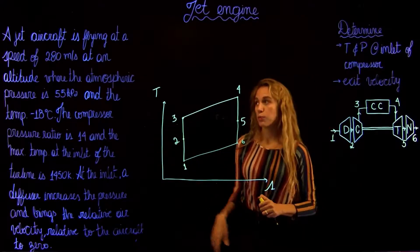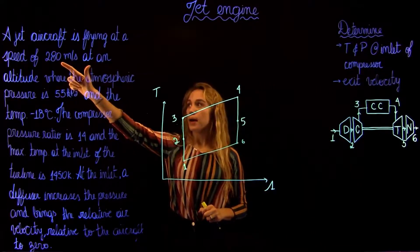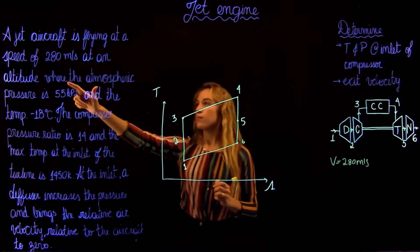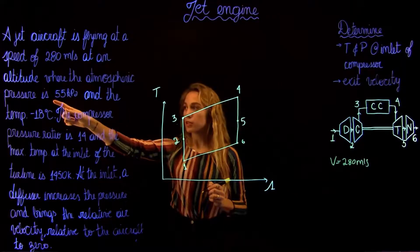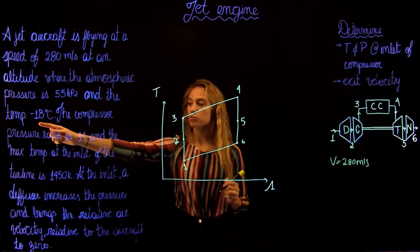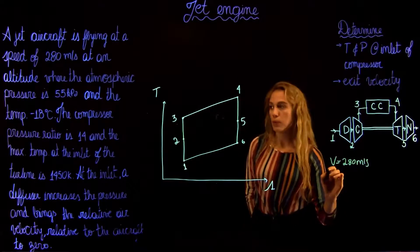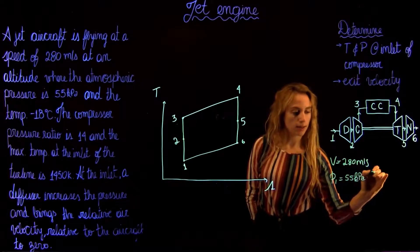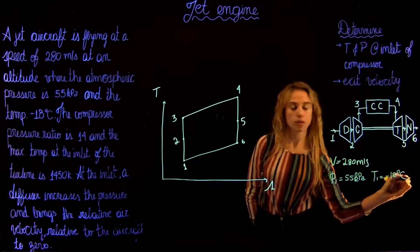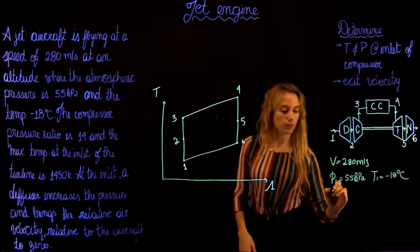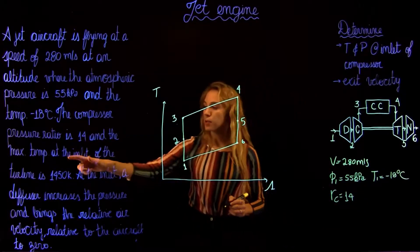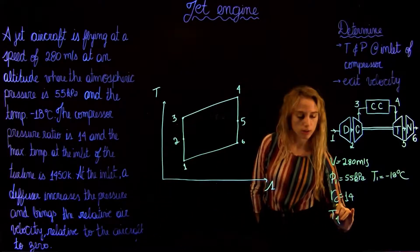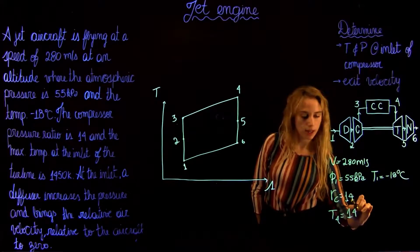Now we can identify the values given in our problem. We have a velocity of 280 meters per second, an atmospheric pressure of 55 kilopascal, and a temperature of minus 18 degrees Celsius at state 1. So P1 = 55 kPa and T1 = minus 18°C. We have a compressor ratio Rc = 14, and the maximum temperature at the inlet of the turbine, T4, is 1450 kelvins.